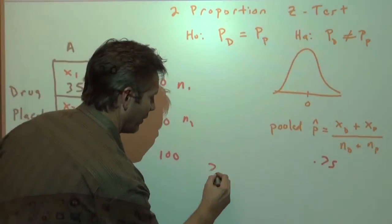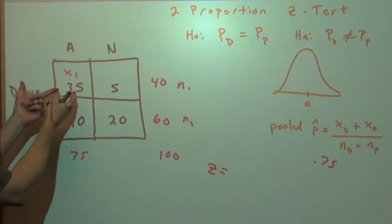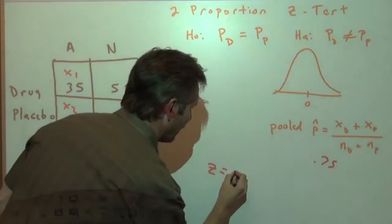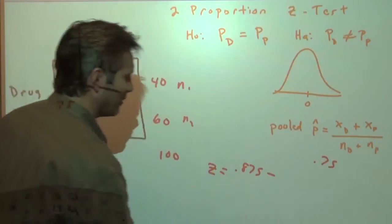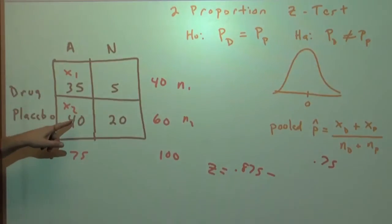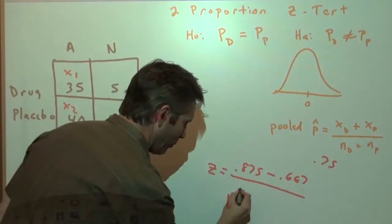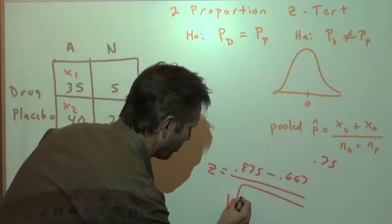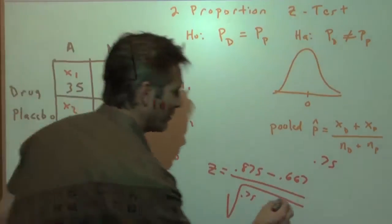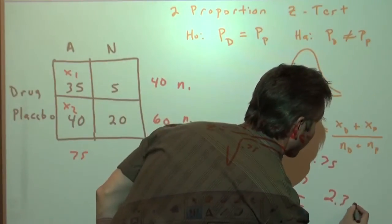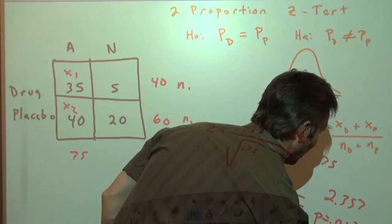Now, as we proceeded with the problem, our test statistic then would be, people with the drug, that was 35 out of 40, that's a p-hat of p₁ of 0.875 minus the proportion 40 out of 60, would be 0.667. And we'd divide it by that wonderful standard deviation formula and use the 0.75, the pooled p-hat down there. We would end up with a z-score of 2.357 and a p-value of 0.0184.